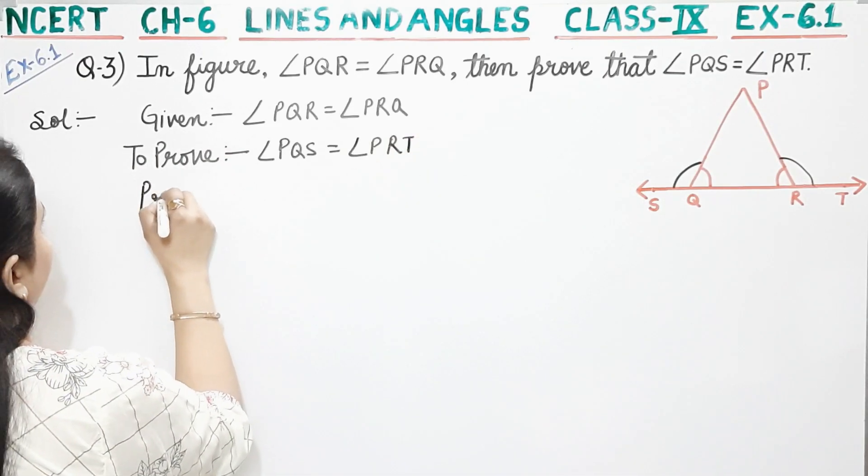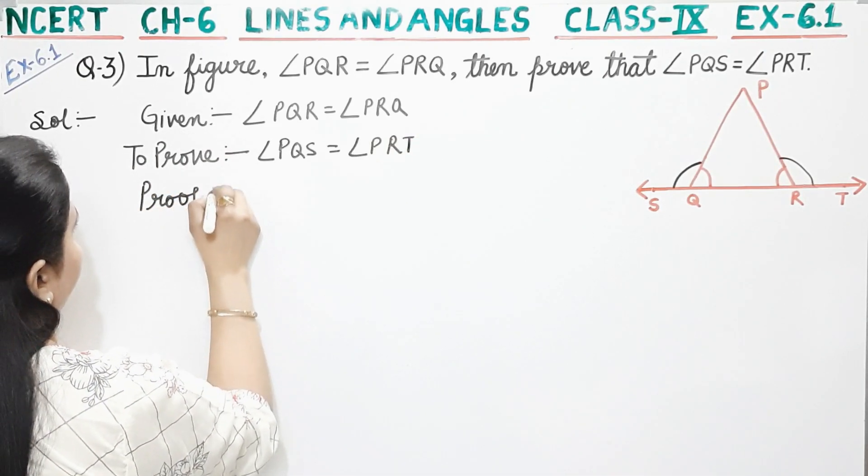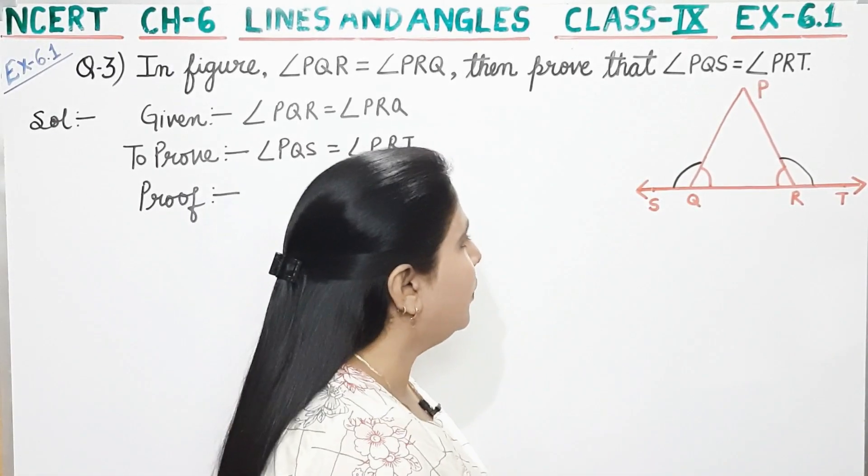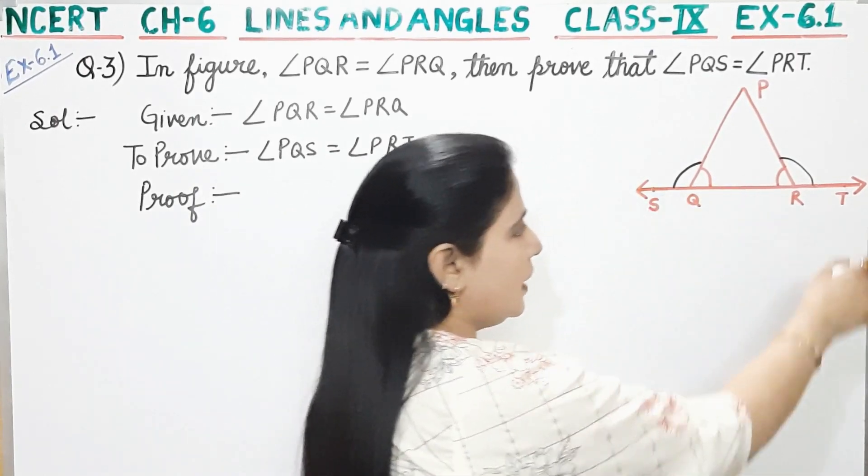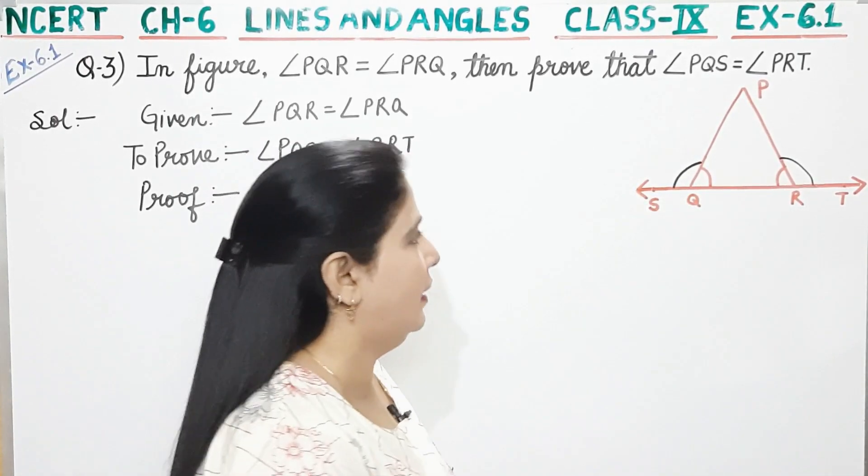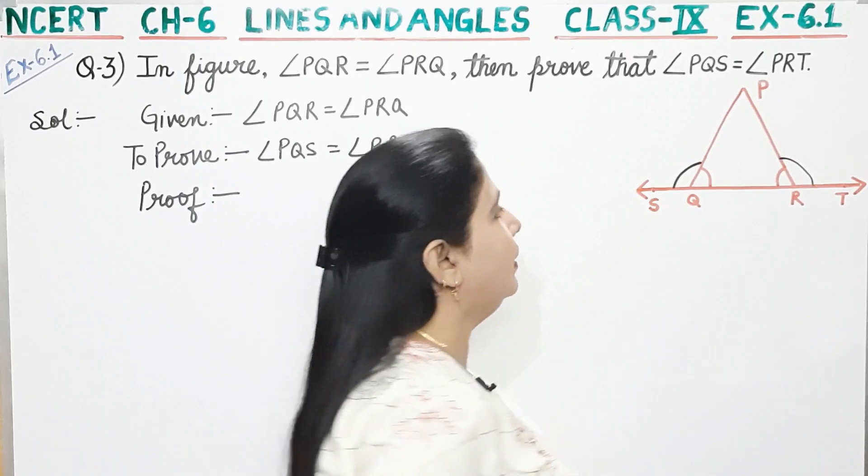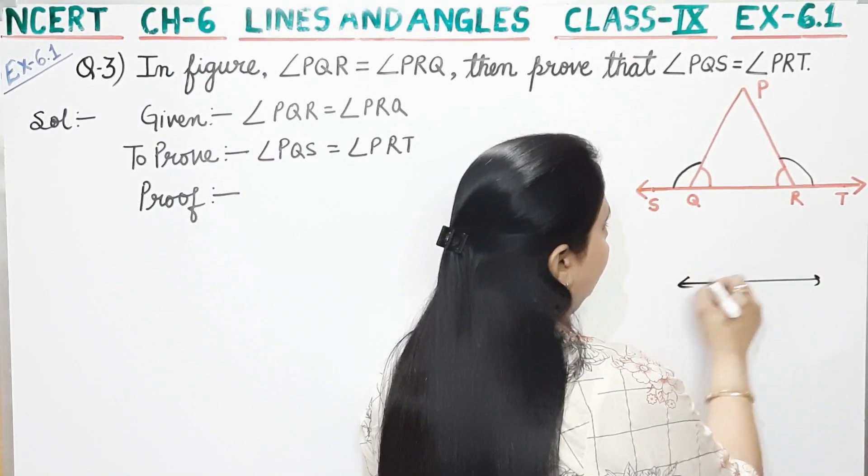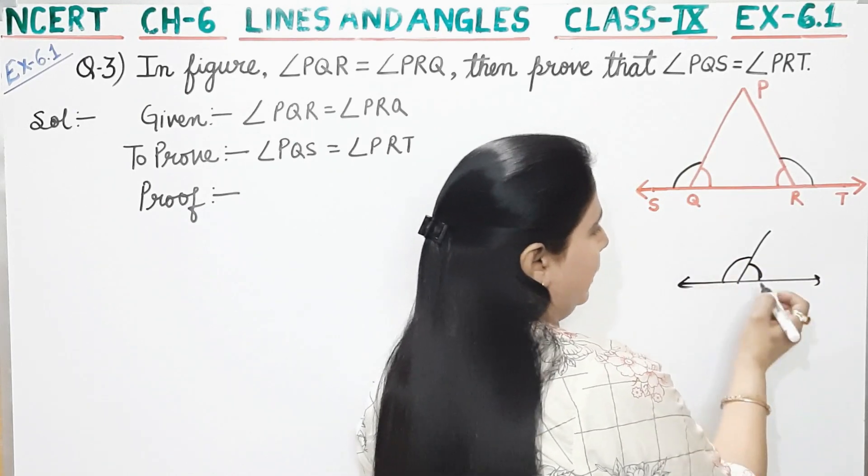Proof. Now ST is a straight line because it is opposite ray. This is a straight line. It means that this angle and this angle are both linear pairs.